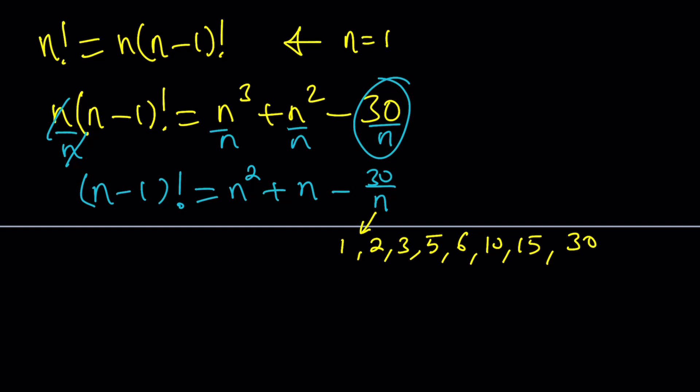So n could potentially be one of these values. Obviously, if n is not one of these values, then n minus 1 factorial is not going to be an integer, which is not good. So you get the idea. We do need one of these values. But which one? You can test them out.